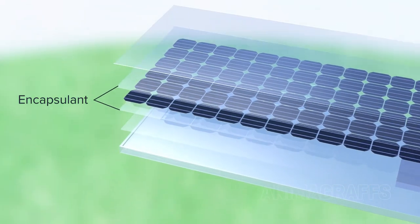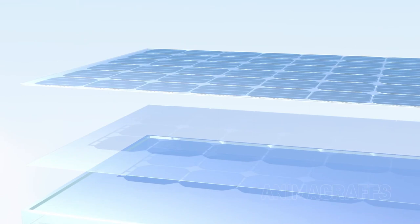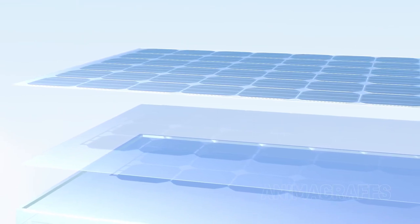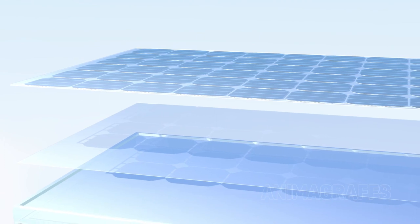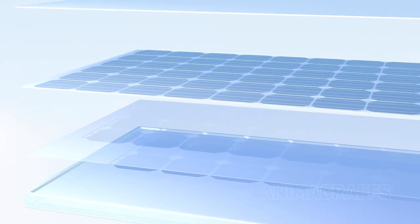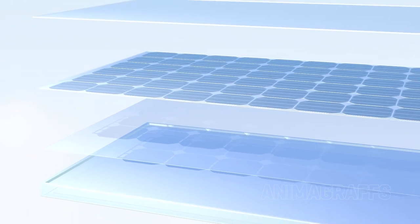Encapsulant. The encapsulant is an adhesive that seals around the solar cells, protecting them from harmful outside elements and keeping them firmly in place. A common encapsulant material, called EVA, ethyl vinyl acetate, is stable under high temperatures and UV exposure, and is also transparent.